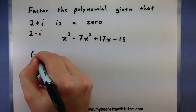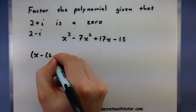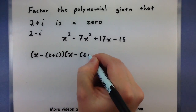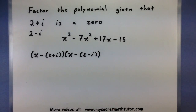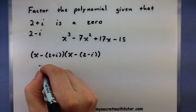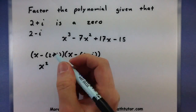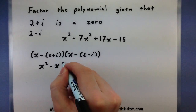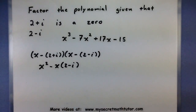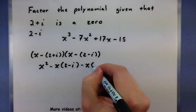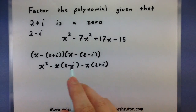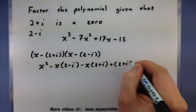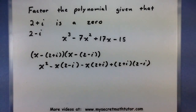So these two factors are (x minus (2 plus i)) and (x minus (2 minus i)). Let's multiply these two together using FOIL. x times x gives x squared. Outside terms: minus x times (2 minus i). Inside terms: minus x times (2 plus i). And the last terms are a negative times a negative, so positive (2 plus i)(2 minus i).